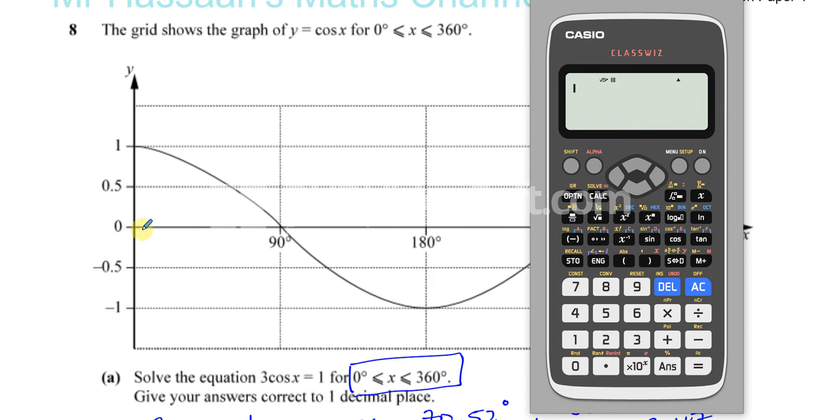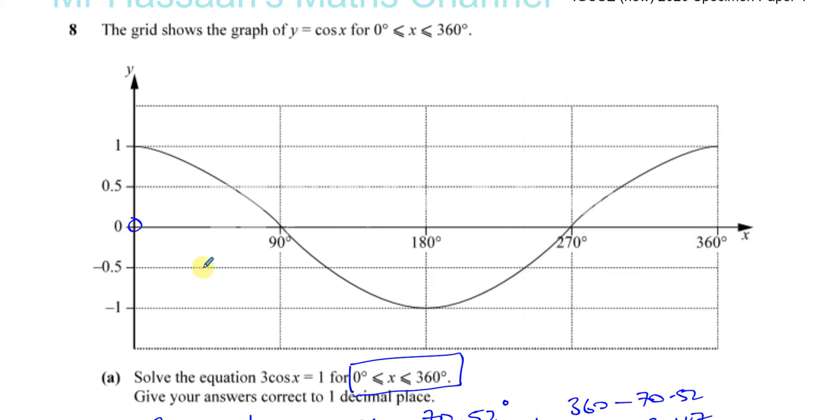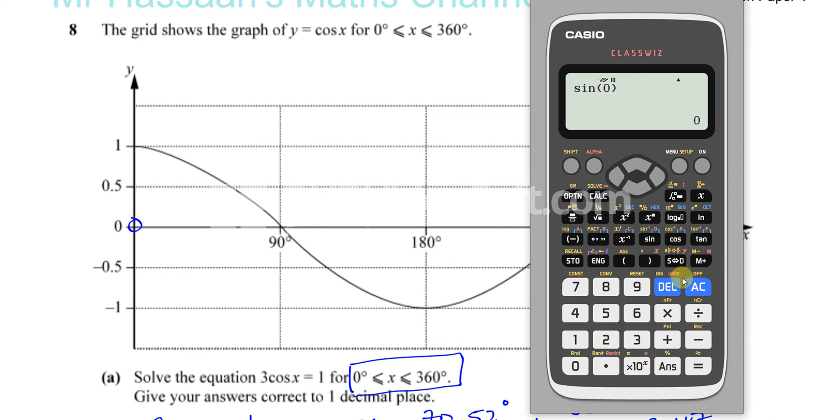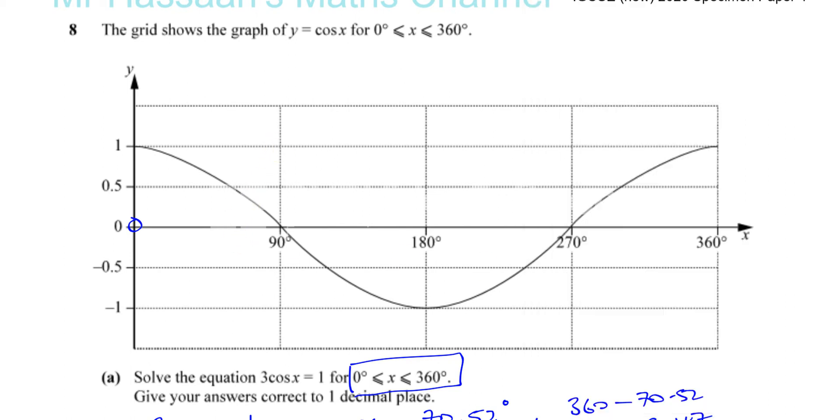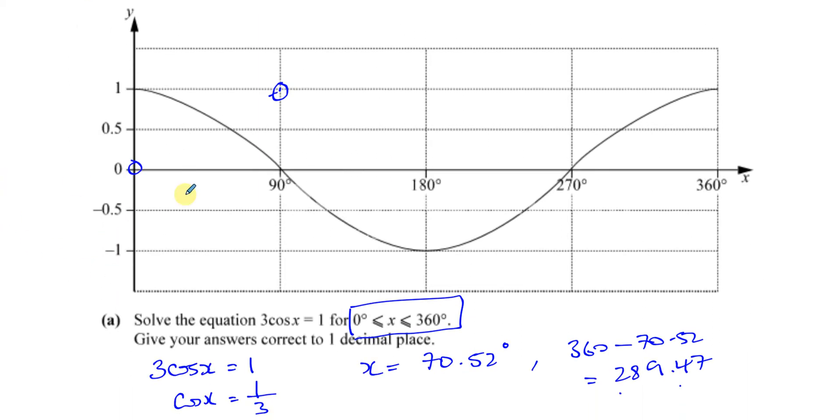You should know what y equals sine x looks like, but if you forgot, you can bring your calculator to the rescue. What was it when the angle is zero? What's the sine of zero? Press sine of zero. It'll give you zero degrees. Make sure that you are in degree mode, so you know it goes through this point here. Sine of 90, you'll see that equals one. Sine of 180 is zero, sine of 270 is negative one, and sine of 360 is zero again.